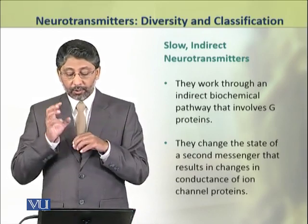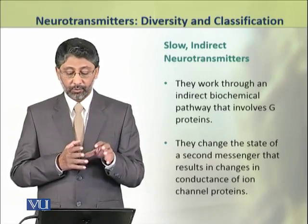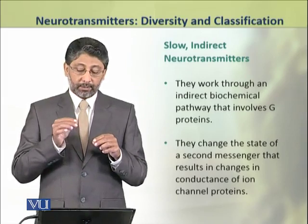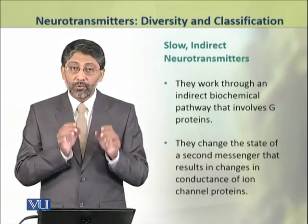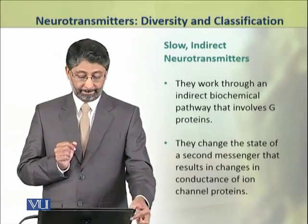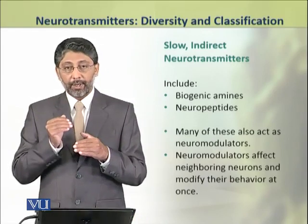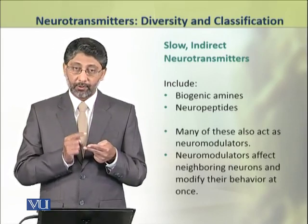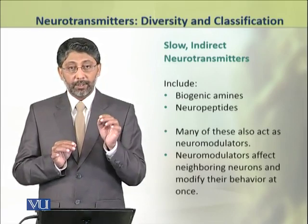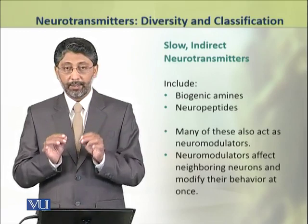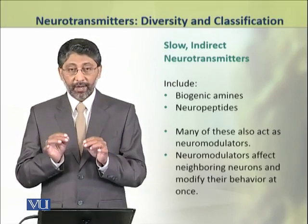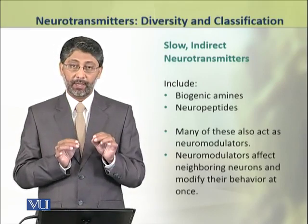The slow, indirect neurotransmitters work through indirect biochemical pathways that involve G-proteins. These neurotransmitters work through a second messenger to act on channel proteins and modify their conductance. Slow indirect neurotransmitters include two groups: biogenic amines and neuropeptides. Many of the neurotransmitters involved in slow indirect neurotransmission also act as neuromodulators, which affect the neighboring neurons and modify their behavior.